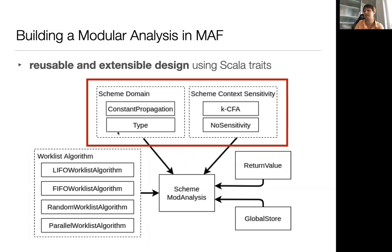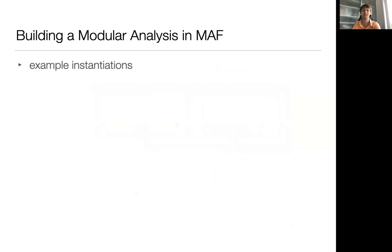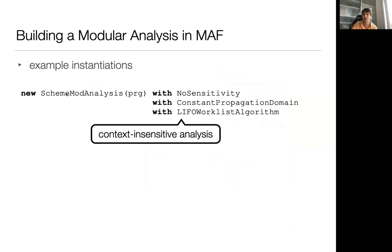Other traits are specific to Scheme analysis and used to easily configure the precision of the analysis. For instance, MAF provides several implementations for abstract domain Scheme, which can directly be plugged into any Scheme analysis. It also provides several traits to pick from to configure the context sensitivity of the analysis. In the end, this makes it very easy for the user to create different analyses with different configurations.